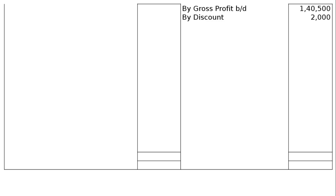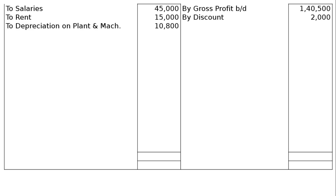Now move to the Profit and Loss Account. By gross profit brought down rupees 1,40,500. By discount received rupees 2,000. To salaries rupees 45,000. To rent rupees 15,000. To depreciation on plant and machinery — after adding rupees 2,000 for installation, the depreciation is rupees 10,800. This amount will be explained while preparing the balance sheet.